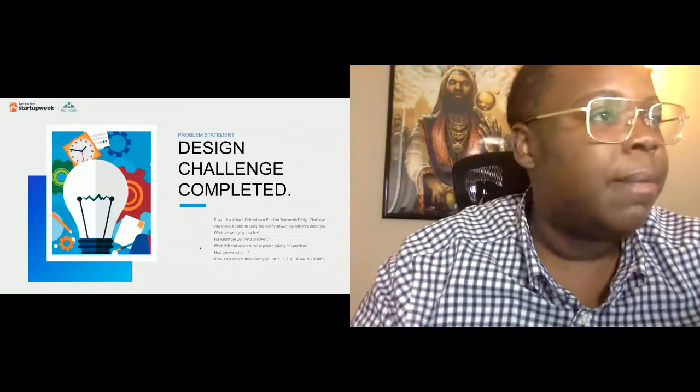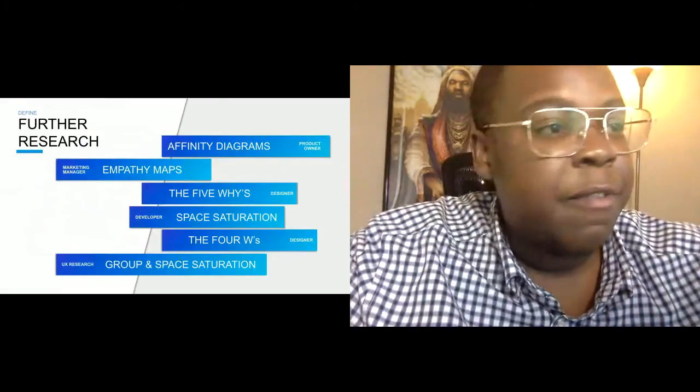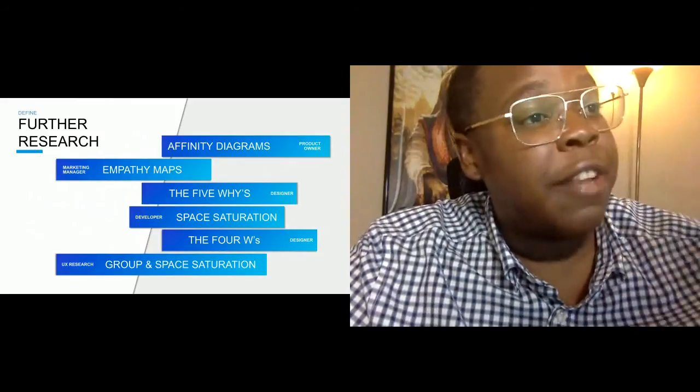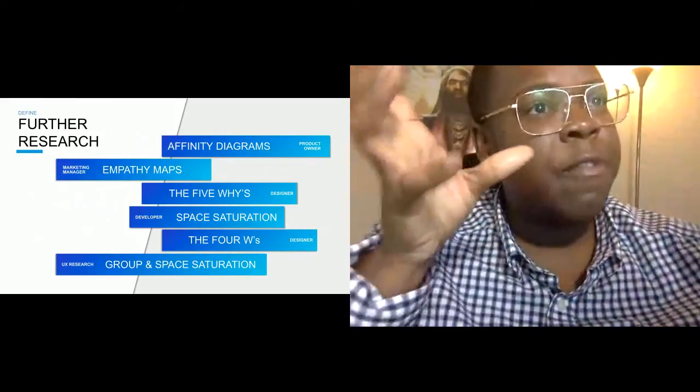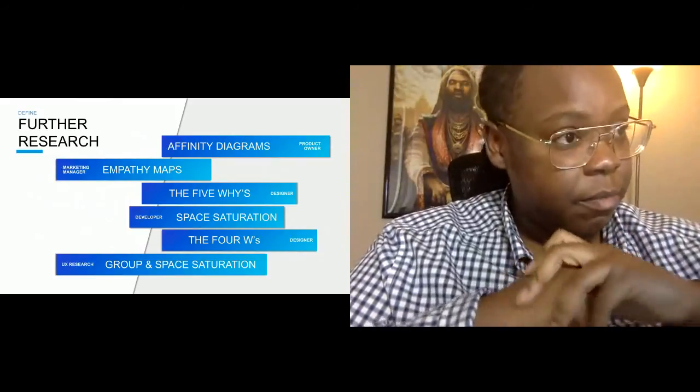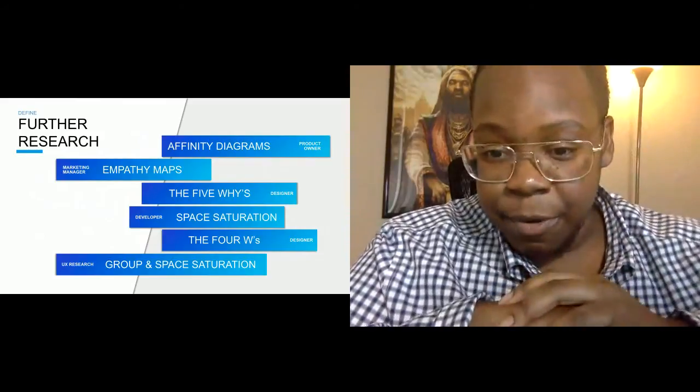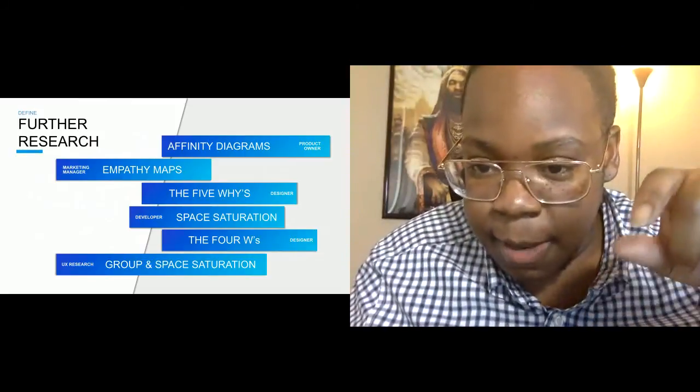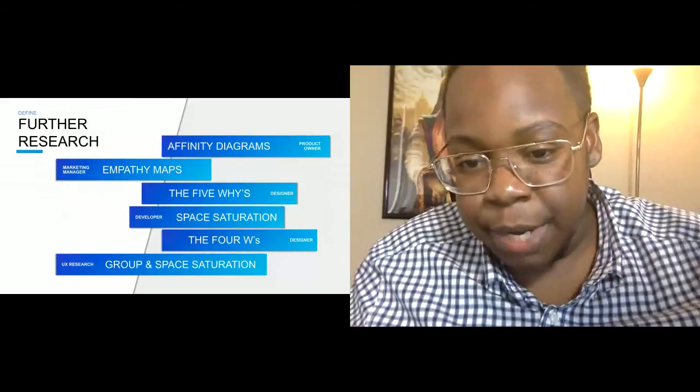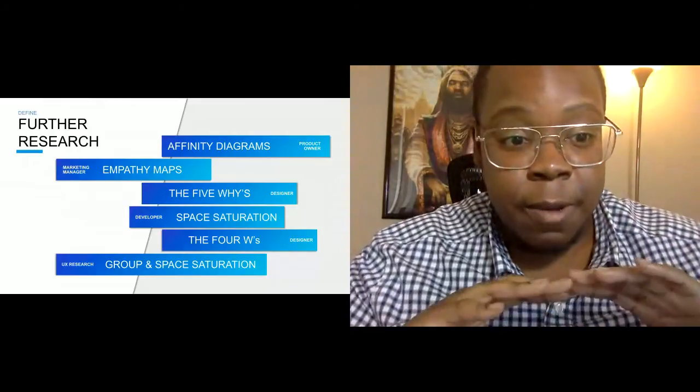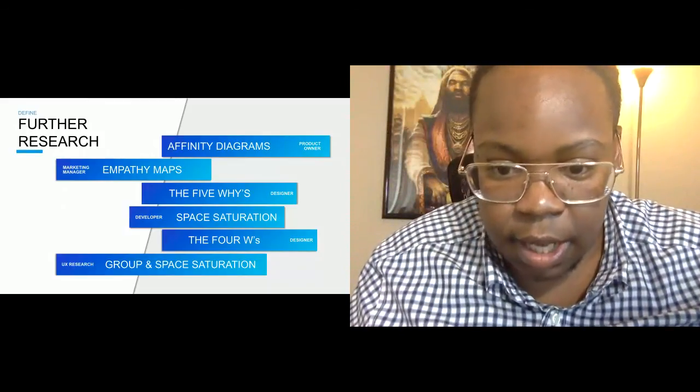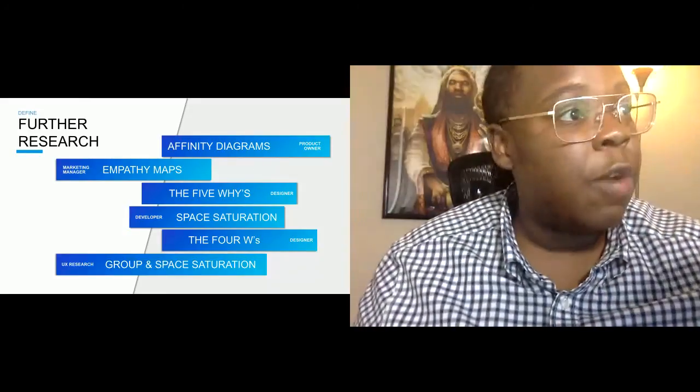Alright. I'll keep going. So further ways kind of to define, and this you can screenshot and again also save your Google Sheets, Gmail, and I can, or not Gmail, but whatever your email address and I could send out these. But this is, again, further things for you kind of to research. Affinity diagrams, empathy maps, the five whys, space saturation, the four W's, group and space separation. Okay. Simply the best. Yeah. So there's a link that is a little bit earlier in the chat, Matthew. If you put your email address on that Google Sheet, we could pretty much, I'm going to send out all the, I'm going to send out this PowerPoint to everyone. So that'll be a little bit easier so I can keep everyone in the same framework.